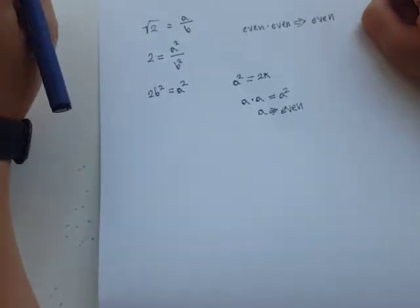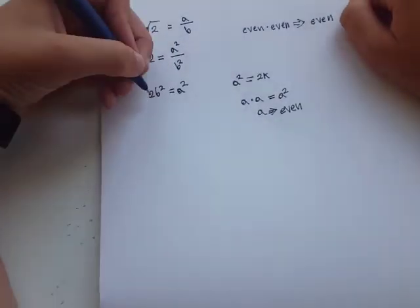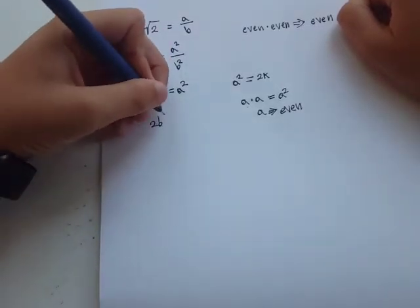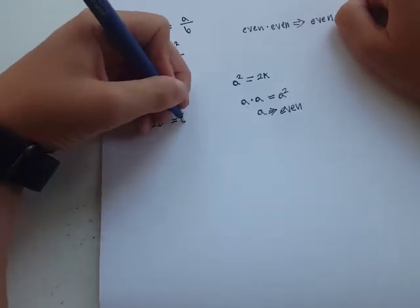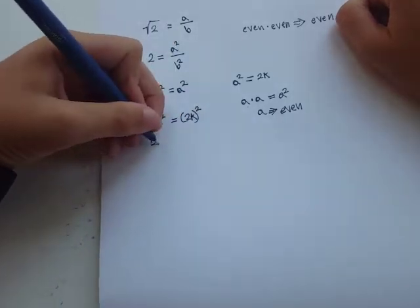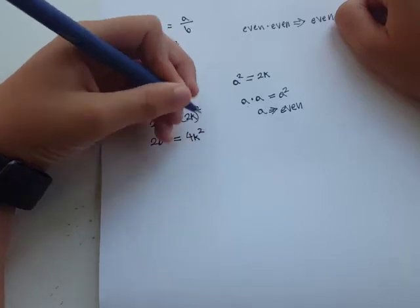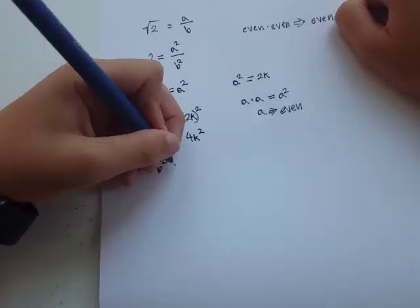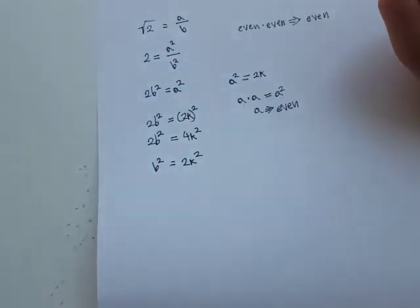Now, let's go back here and replace a with 2k. So 2 times b squared equals 2k squared. This is 2b squared equals 4k squared. Divide both sides by 2. And we find that b squared is 2 times k squared.